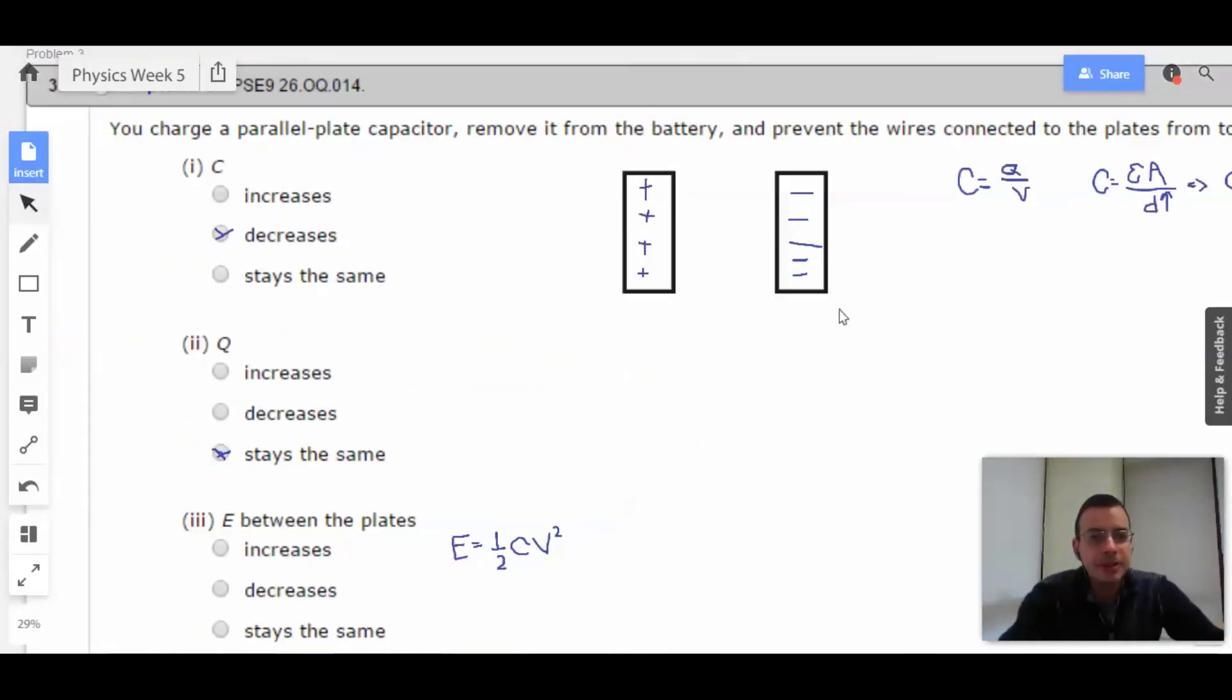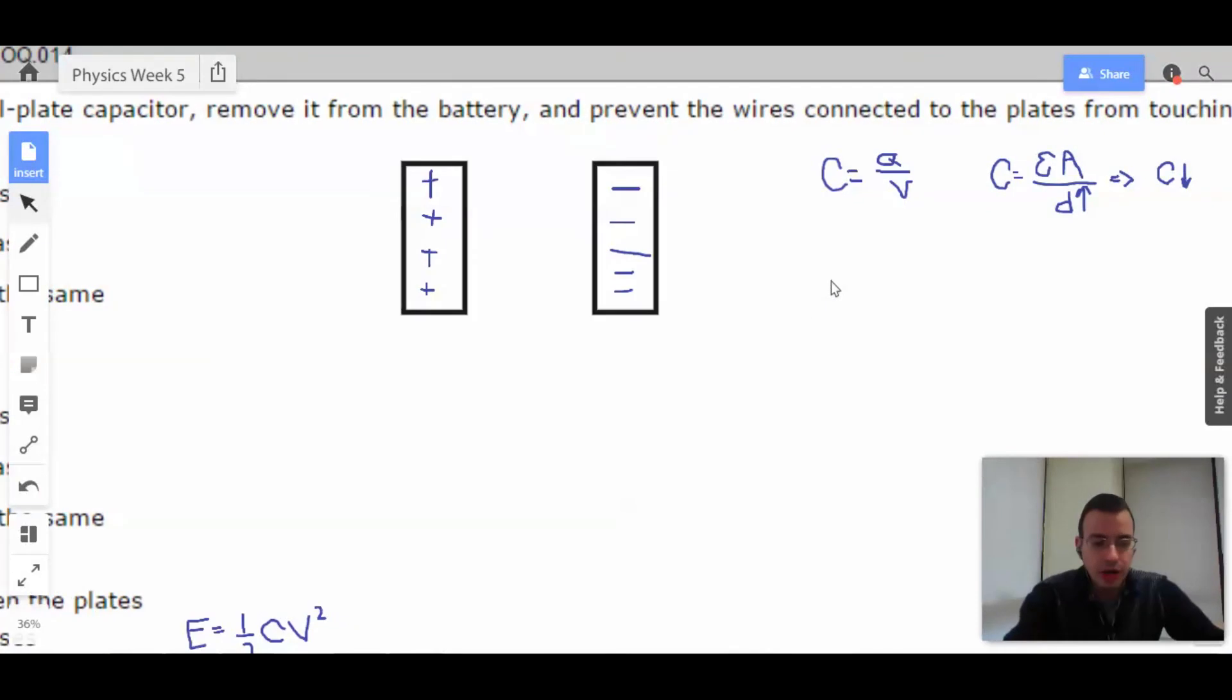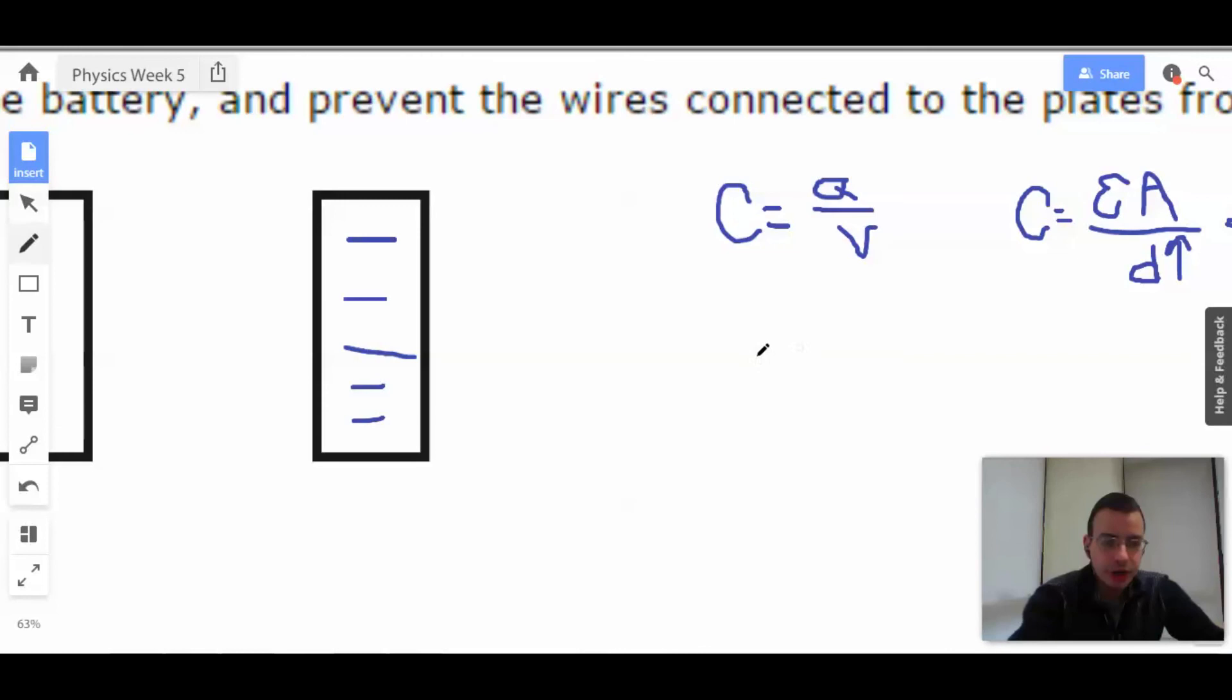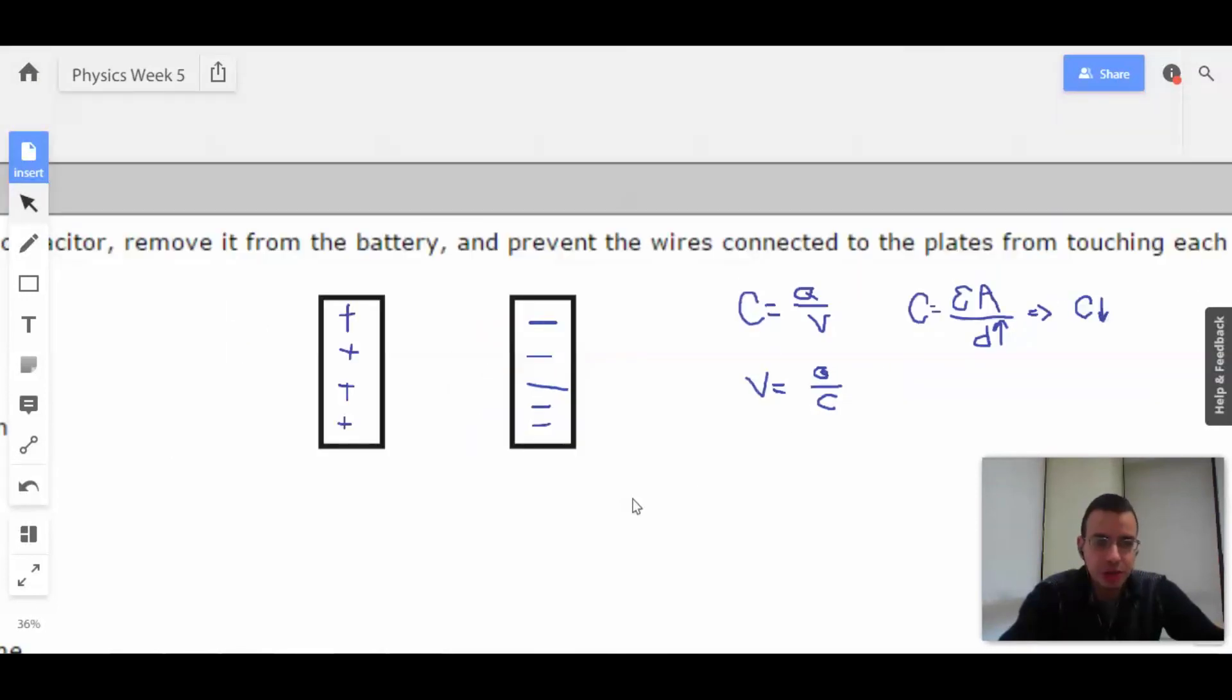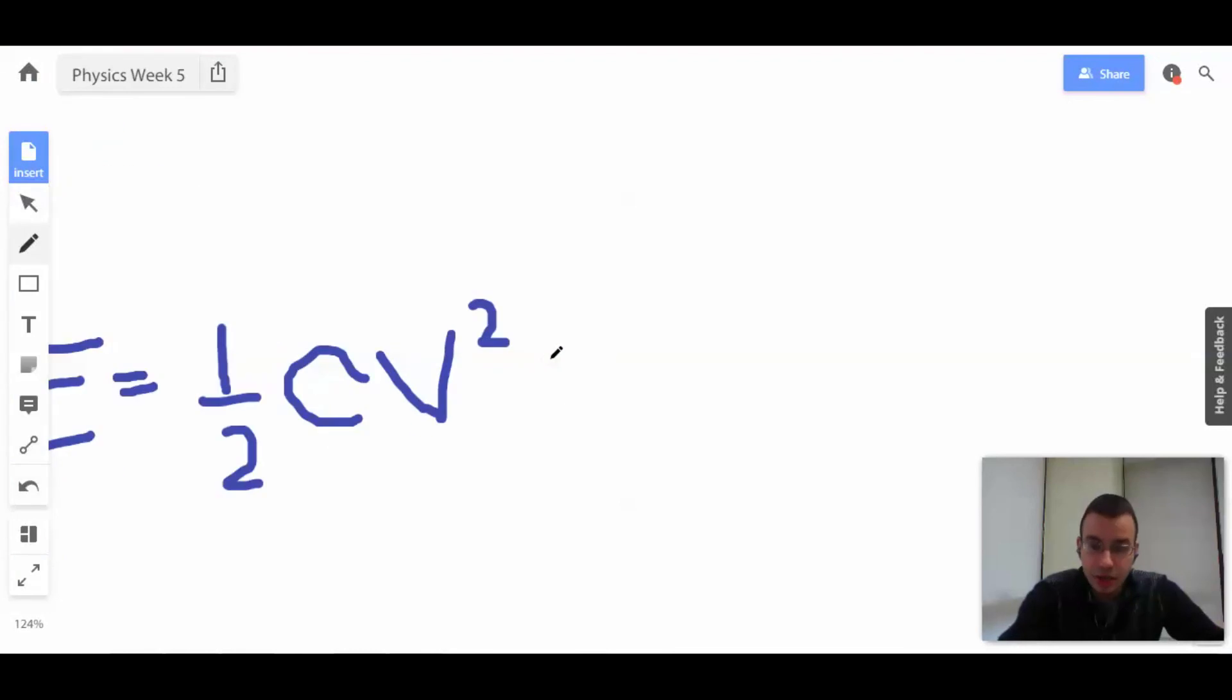So, let's say then that instead, voltage equals Q over C. Just rearrange the equation. Q over C. Now, you've just got to remember that for like three seconds.